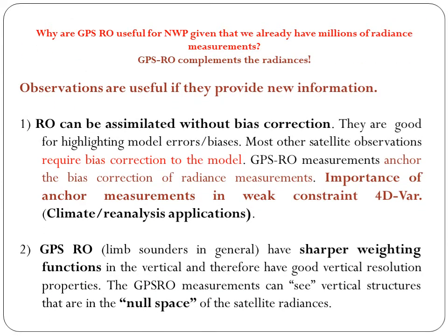GPS RO is useful for Numerical Weather Prediction (NWP) because it complements radiance measurements. RO can be assimilated without bias correction, making it good for highlighting model errors. Most other satellite observations require bias correction; GPS RO measurements anchor the bias correction of radiance measurements. This is important in weakly constrained 4D-Var, climate, or reanalysis applications. GPS RO and limb sounders in general have sharper vertical weighting functions and therefore better vertical resolution, and GPS-based RO measurements can see vertical structures in the null space of satellite radiances.